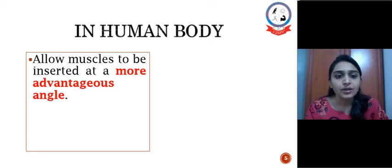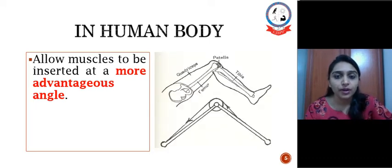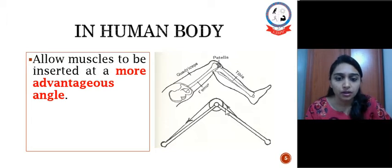Next in human body we can also find some examples of fixed pulley. These allow muscle to be inserted at more advantageous angle. For example, quadriceps muscle works as a pulley in human body where because of patella the insertion of the quadriceps tendon is such that it gives more advantageous effect than others.